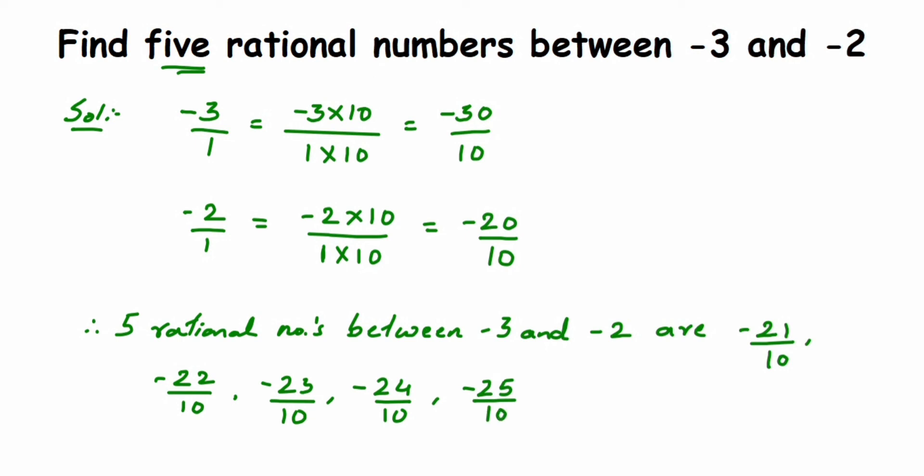These are the five rational numbers between minus 3 and minus 2. If you take any number other than 10, your answer will be different from mine, but that's completely fine. As I said, there are infinitely many rational numbers, so your answer may vary but will still be correct. I hope this is clear — if you have any questions or doubts, you can drop a comment below. Thank you so much for watching.